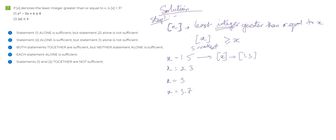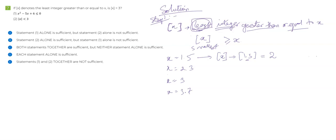We are looking for an integer, so the value of box of 1.5 should be an integer, and it should be greater than or equal to x. I'm looking for an integer — can it equal x = 1.5? No, it cannot. So I'm looking for an integer that is greater than this, and it should be the least. If I want an integer greater than or equal to x, I can take 2, 3, 4, 5 and so on. But since I'm looking for the least integer, the least integer just greater than 1.5 would be 2. So box of 1.5 is 2.